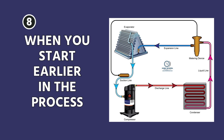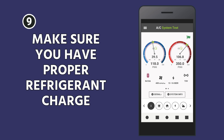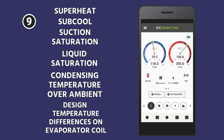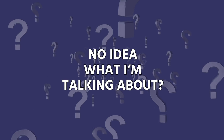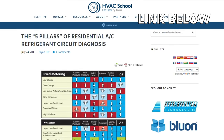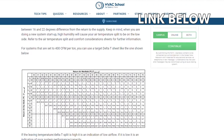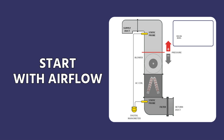When you start earlier in the process and just go with the most obvious things, many times you'll find the obvious problem before you get to scratching your head at the end. Step nine: make sure that you have the proper refrigerant charge. That's where you check your superheat, subcooling, suction saturation, liquid saturation, your condensing temperature over ambient, and your design temperature differences on your evaporator coil. If this is completely over your head, refer to our article on HVACRschool.com that talks about the five pillars of refrigeration circuit diagnosis. But before you get to this point, start with airflow.